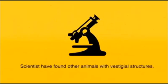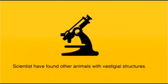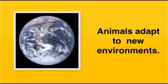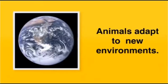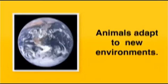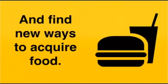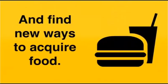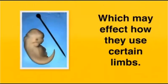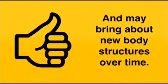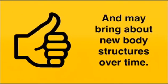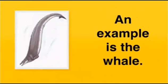Scientists have found other animals with vestigial structures. The primary reason why animals have vestigial structures is they have adapted to new environments. As they have adapted, they have found new ways to acquire food, which has affected their overall use of certain limbs, and may bring about new body structures over time.